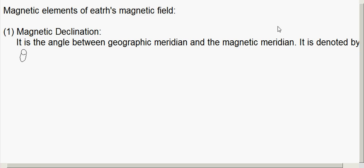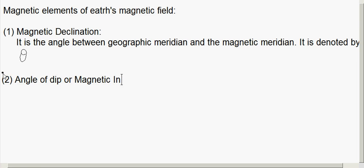The next one, the second magnetic element, is the angle of dip or magnetic inclination.